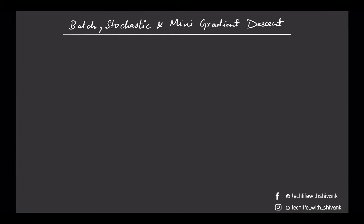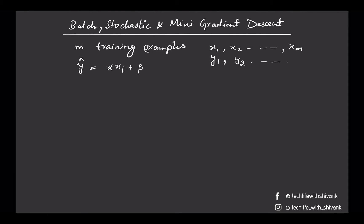The difference between batch, stochastic, and mini-batch gradient descent is the number of training examples we use to calculate our loss function. Let's say we have m training examples, and our predicted value y-hat for a given training example x_i is given by alpha*x_i + beta. We have x1, x2 up to x_m with corresponding outputs y1, y2, y_m, and corresponding predicted outputs y1-hat, y2-hat, y_m-hat.